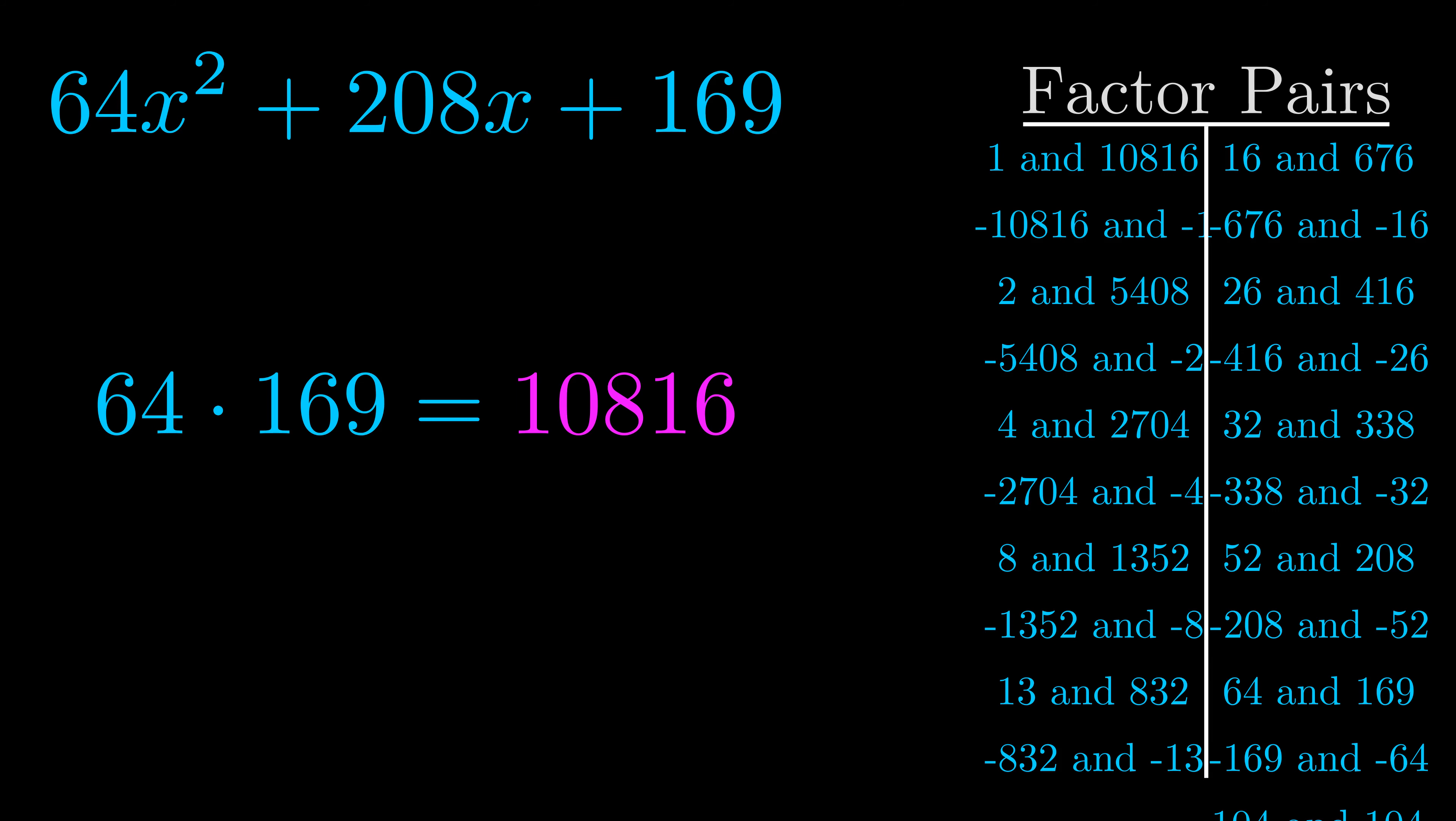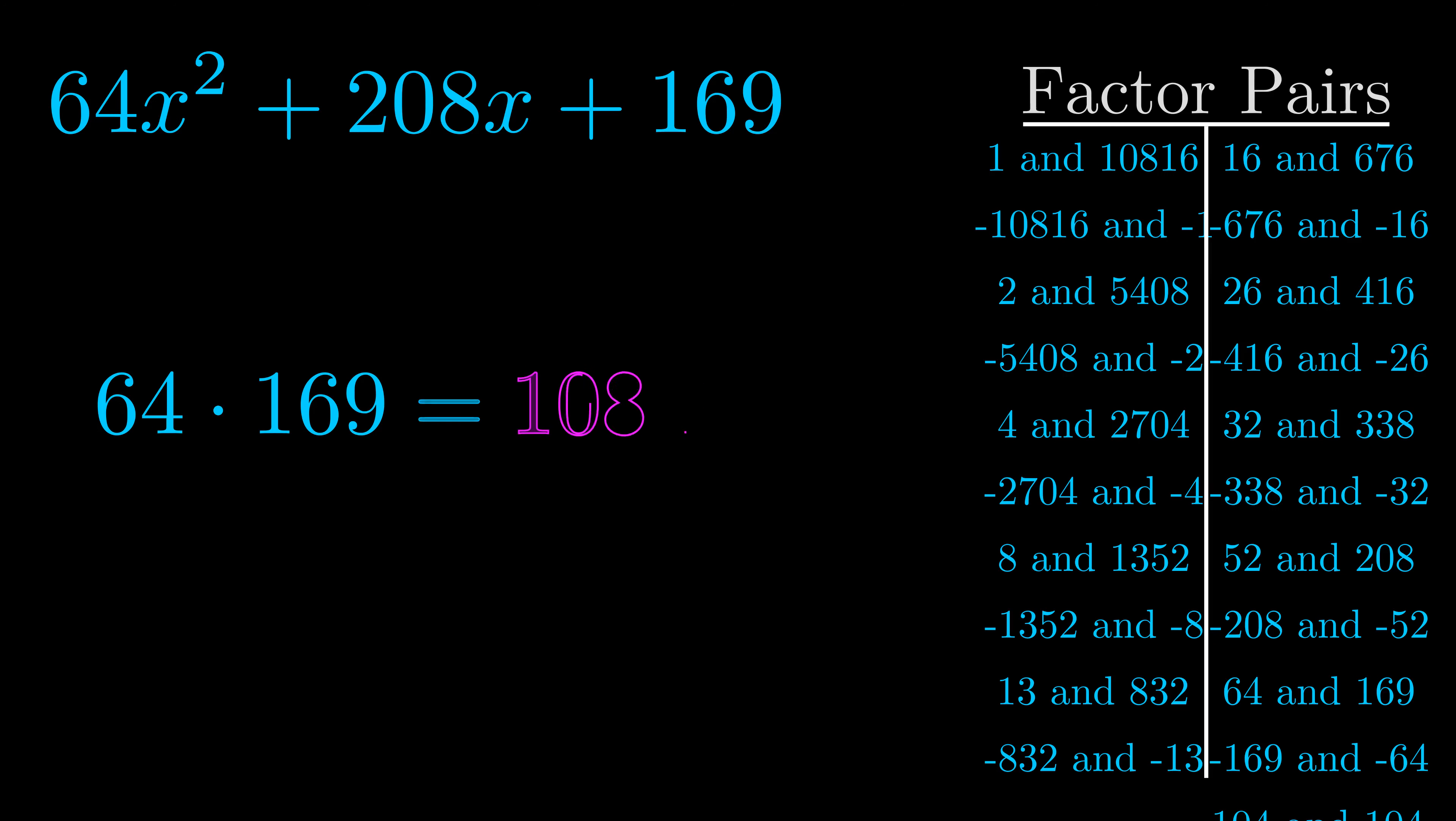Now once you have these factor pairs the goal is to find which of these pairs adds to the b value. The b value is the coefficient on the x term. That's the middle term, the one that we haven't done anything with yet. And really this is the only factor pair that we need.